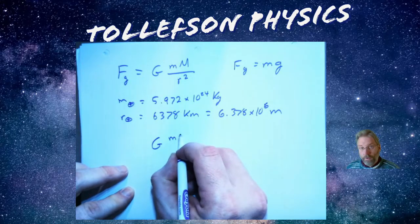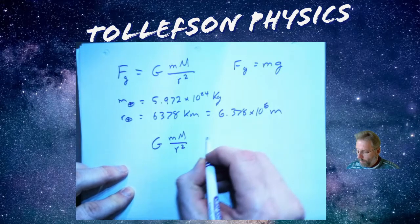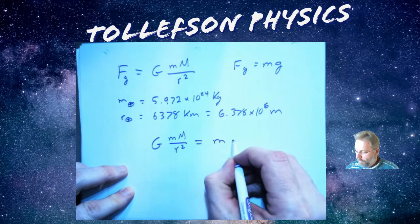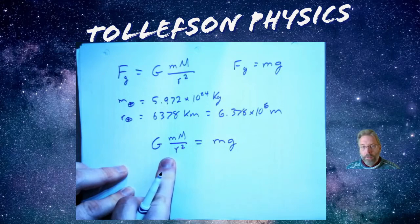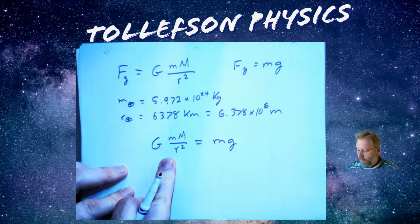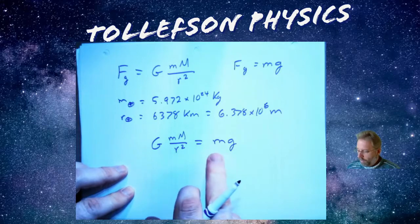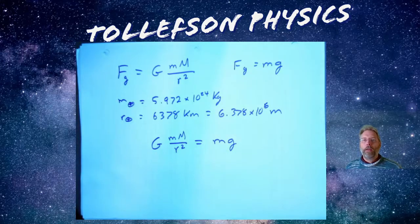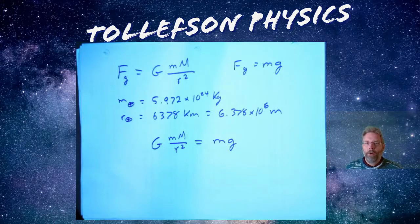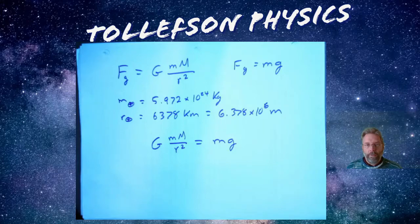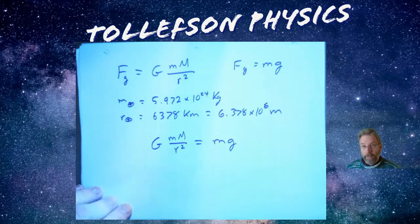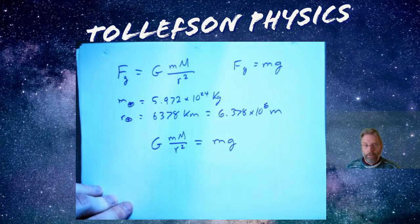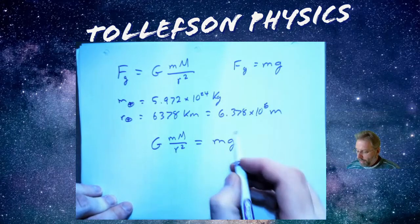Since this is how I calculate F_g and this is how I calculate F_g, there's no reason why I can't set those equal to each other. So I have the law of universal gravitation equal to mg. Another question that comes up is what am I talking about? I'm talking about let's say the mass of me.